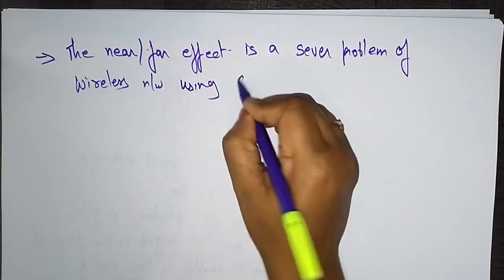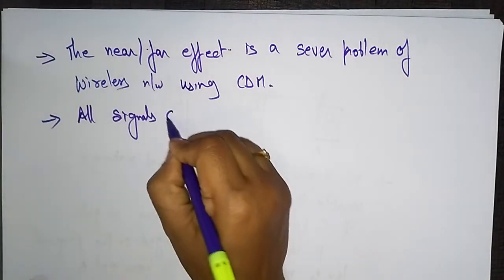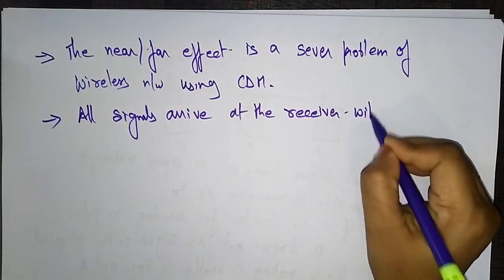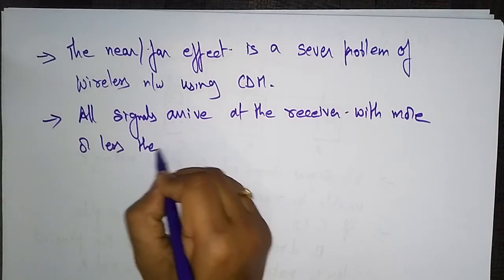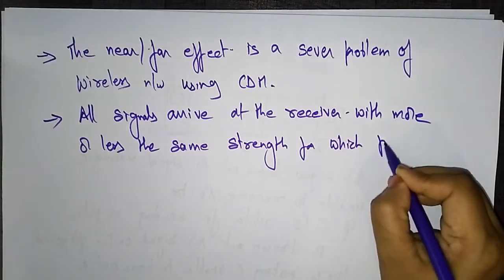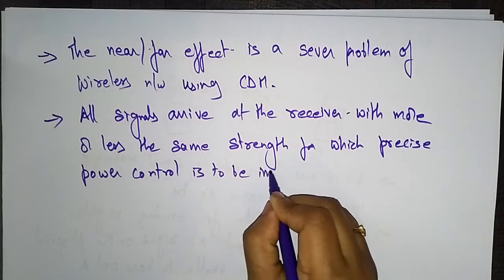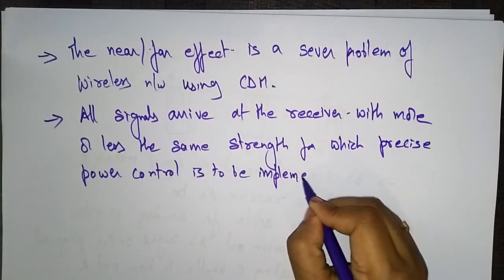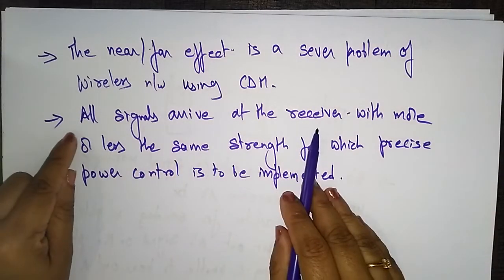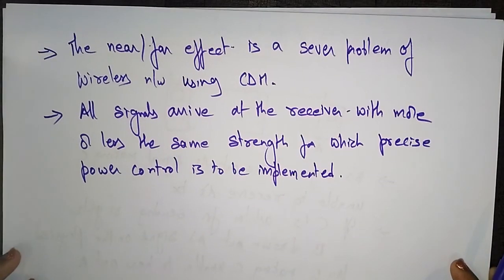This problem is particularly relevant in networks using CDMA. All signals must arrive at the receiver with more or less the same strength, for which precise power control must be implemented. This precise power control is the main motivation behind the near and far terminal problem in wireless technology.